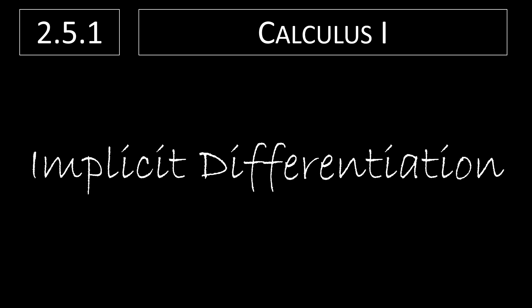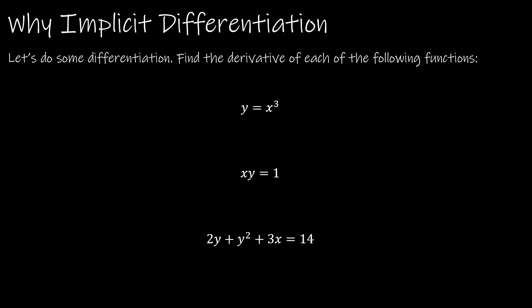Only one video for this section. We're going to take a look at implicit differentiation. The first question is: why implicit differentiation? I have three functions here to illustrate the need for this strategy. For my first function, I have y equals x cubed. This function is written in explicit form — y is isolated and everything else is on the opposite side. It's very easy to find y prime here because I can just use the general power rule: 3x squared.